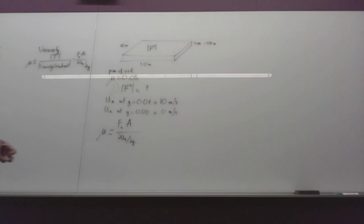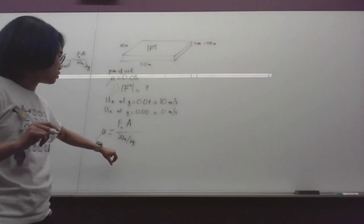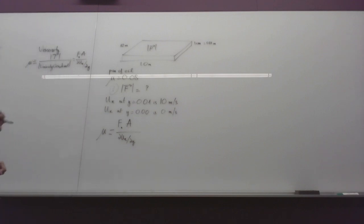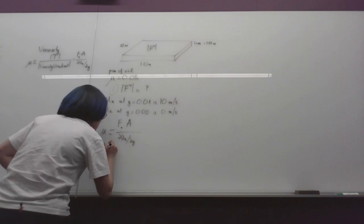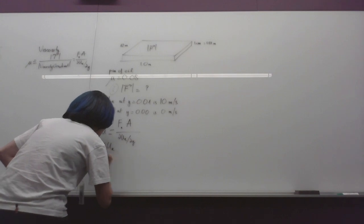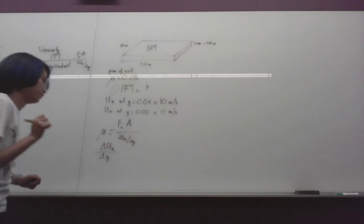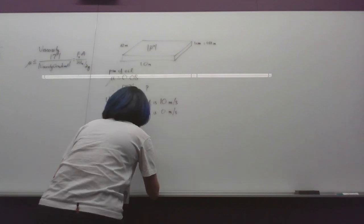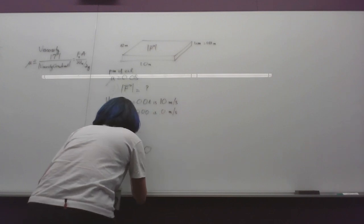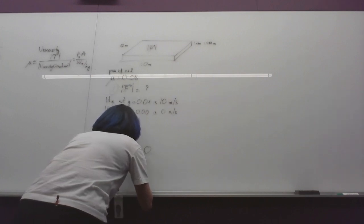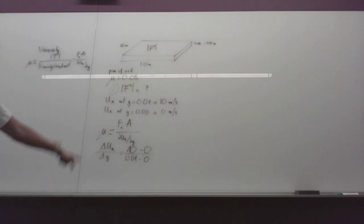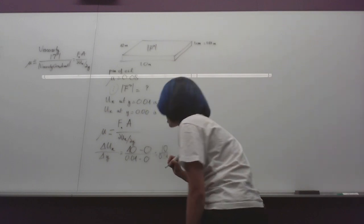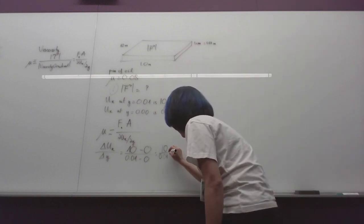So in this problem, we don't have the formula, the function of ux, so the nearest thing we can use here is the rate of change. We already have these two pieces of information here, so we can calculate the rate of change of ux over delta y. And this will be 10 meter per second minus 0 meter per second over 0.01 minus 0. So we will have 10 meter per second over 0.01, so we will have 1000.